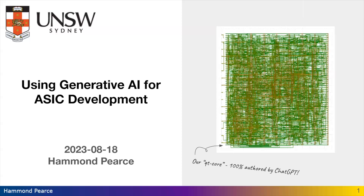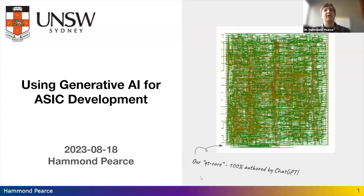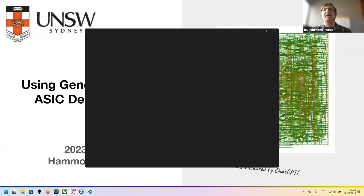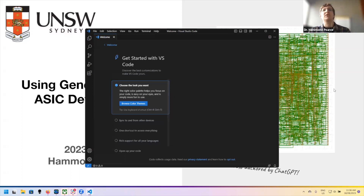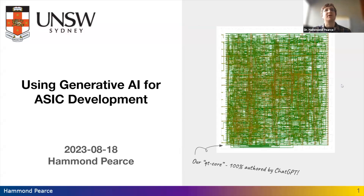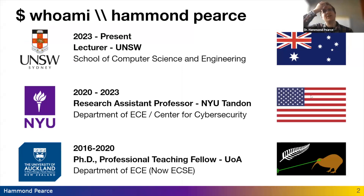Okay, we are sharing. What I'm going to be talking about today is using generative AI, particularly things like ChatGPT, for hardware development. I'll frame this discussion around the success we had in making a project to design with it, but also the various other things we've discovered. I'm currently a lecturer at UNSW in Australia; previously I was at New York University and before that I did my PhD at the University of Auckland, New Zealand.